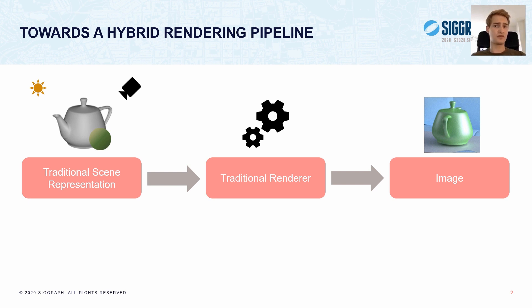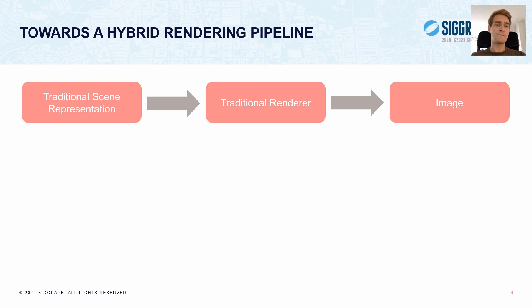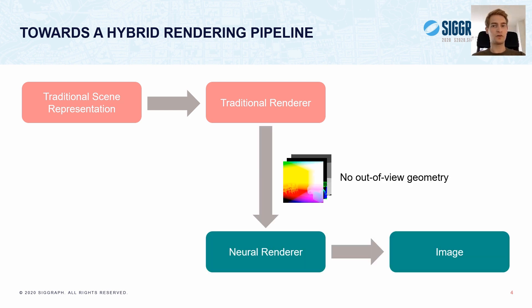Physically based rendering, however, is computationally expensive. To combat the high cost, prior works have proposed to render inexpensive images of the scene, a gbuffer, using a traditional renderer and then translating these to higher quality images using neural networks.